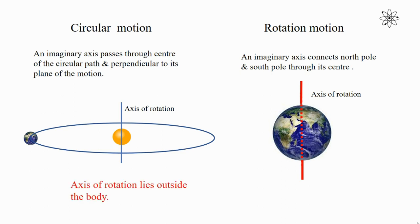In circular motion, the axis of rotation lies outside the body. In the case of rotational motion, the axis of rotation lies inside the body.